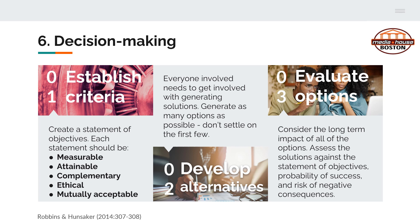Step two: develop alternatives. This is a generative process where everyone gets involved in creating as many alternative solutions as possible. Do not settle on the first few just because it's easier to move on from the step — focus on quantity, and then you can focus on quality. Step three: evaluate your options. Consider all the long-term impacts, assess solutions against the statement of objectives, the probability of success, and the risk of negative consequences. That will help you decide which is the best solution to implement.